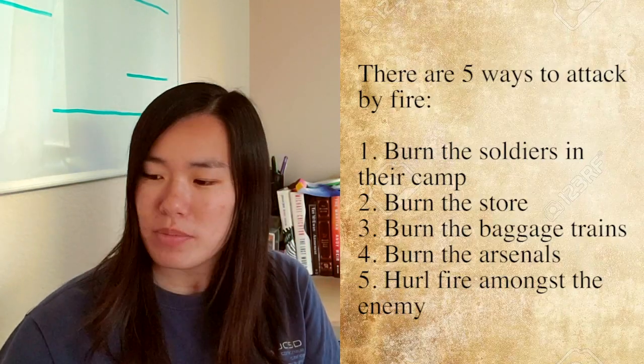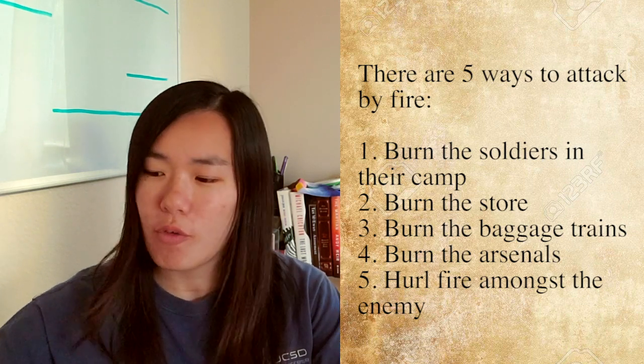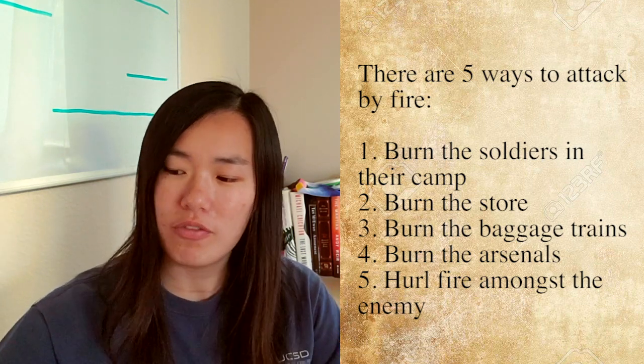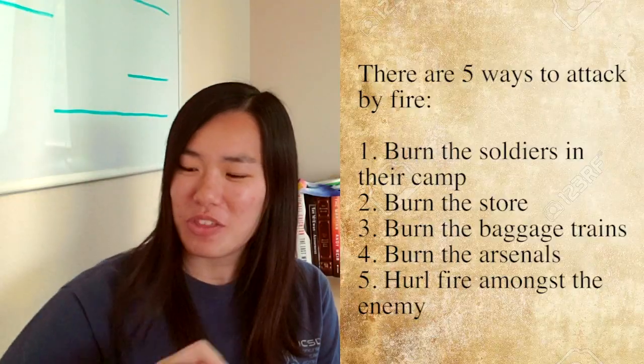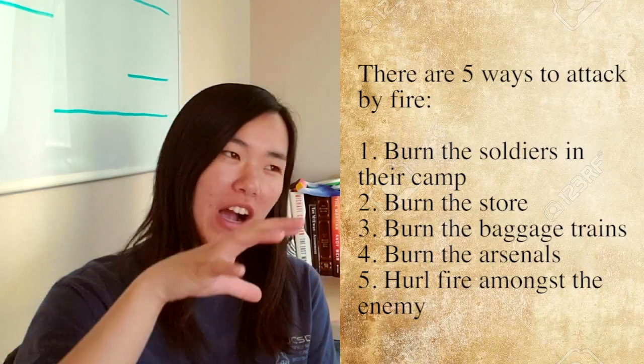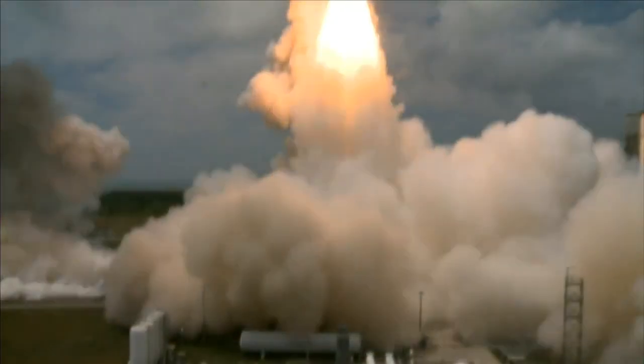Chapter 12, attack by fire. One, burn the soldiers in the camp. Two, burn the stores. Three, burn the baggage trains. Four, burn the arsenals. And five, hurl fire amongst the enemy. Since we're going to fight this war without drawing a single drop of blood, this is what we're going to do. Number one, burn the soldiers. We're just going to ignore that one. TwoSet says no to domestic violence. Number two through four, burn the store, the baggage trains, and the arsenals are kind of all going to go under the same umbrella. They're basically saying get rid of their resources and let them starve or freeze to death. So you combine all of that together and you launch a clothing line specifically focused on this war effort.